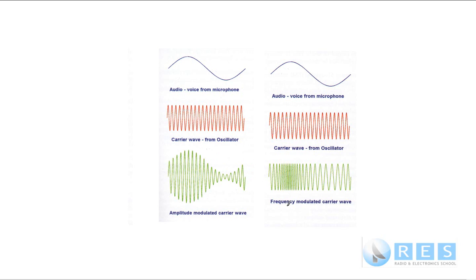There is another method. We can leave the modulating audio the same, leave the carrier the same, but notice this time what's happening is the frequency of the carrier is changing, not the amplitude. So the audio is being mixed with the carrier in such a way that the frequency is changing — this is a lower frequency here, they're all bunched up here, that's a higher frequency. That is called frequency modulation.